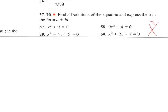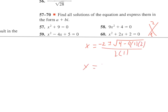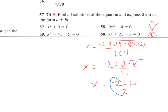Now we need to find all solutions. Trying to factor by multiplying to 2 and adding to 2 doesn't work, so if they tell us it's imaginary I'd go straight to the quadratic formula: negative b plus or minus the square root of b squared minus 4ac, all over 2a. That gives us negative 2 plus or minus the square root of 4 minus 8, which is negative 4, over 2. The square root of negative 4 is 2i, so after reducing we get negative 1 plus or minus i.